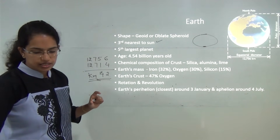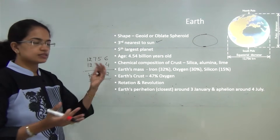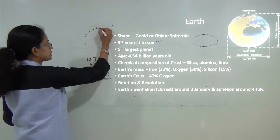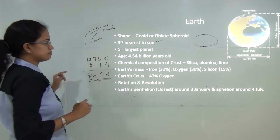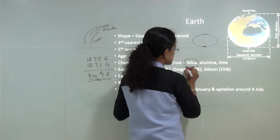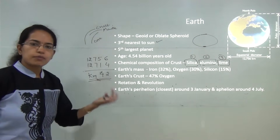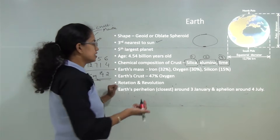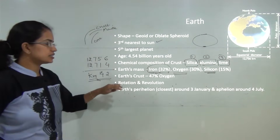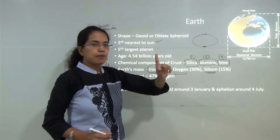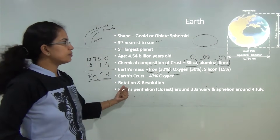Moving on to the major chemical composition — the earth is made up of the crust, the mantle, and the core. The crust is the outermost layer, the mantle lies beneath it, and the innermost part is the core. In the outermost crust, the maximum proportion is silica, followed by aluminum, then lime. However, when talking about the mass of the whole earth, iron is highest at 32%, followed by oxygen and silicon. The crust itself is made of silica and alumina — both compounds contain oxygen — so the crust is composed of approximately 47% oxygen.